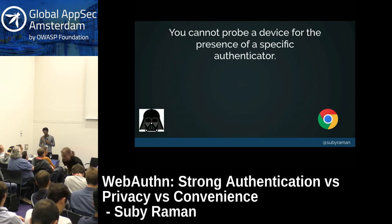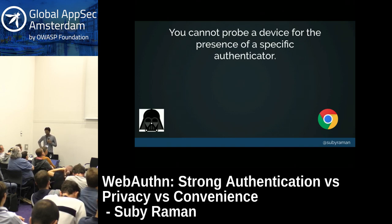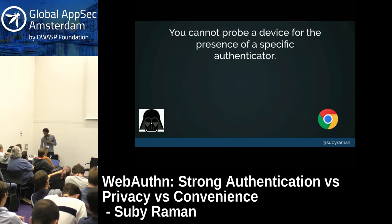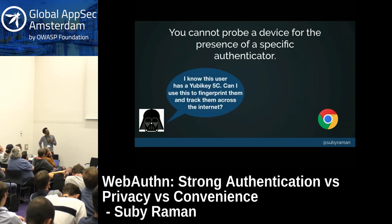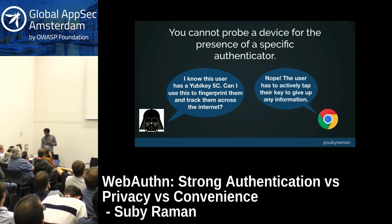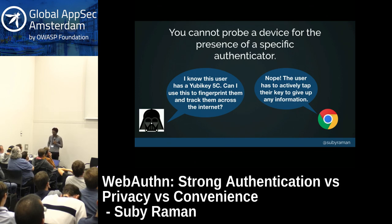What this means is that any random website cannot probe a device for the presence of a specific authenticator. The past few decades have shown that adware companies will go to any length to track and fingerprint users across the internet, and integrating hardware with the web experience could give them another pathway. But a marketing company wanting to track a user by knowing they have a YubiKey 5C is not possible with WebAuthn, because the API requires active user consent — the user has to actively tap their key to give up any information.